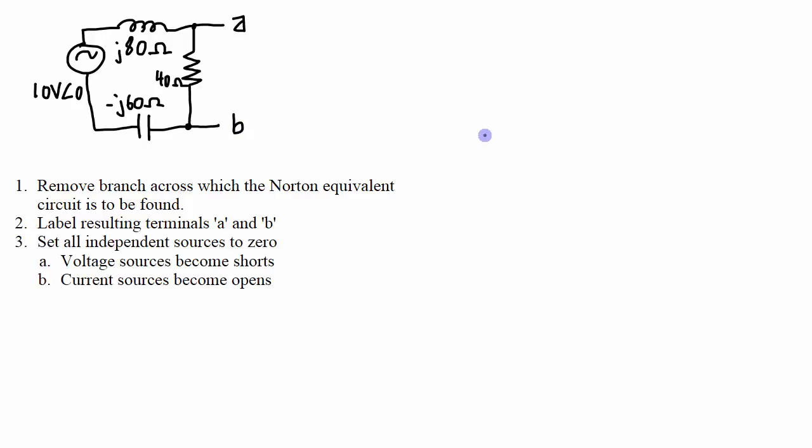The third step is to set all the independent sources to zero. And what this means is voltage sources become shorts and current sources become opens. So I am going to remove this voltage source. It becomes a short. I don't have any current sources, so I don't need to set any of those to opens.